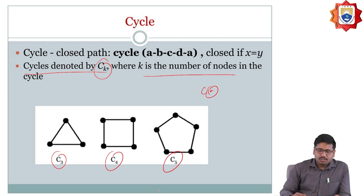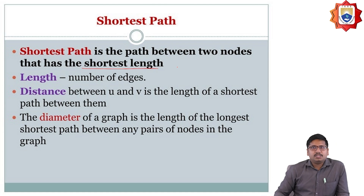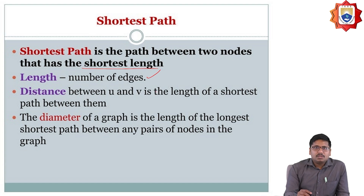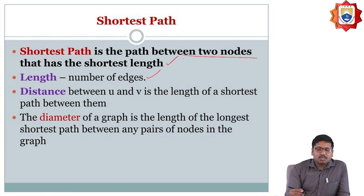Shortest path is the path between two nodes that is going to have the shortest edge length. Length is nothing but the number of edges, and distance between u and v is the length of the shortest path between them. The diameter of the graph is the length of the longest shortest path between any pair of nodes.